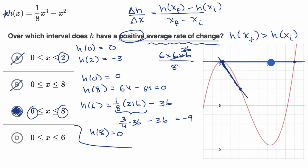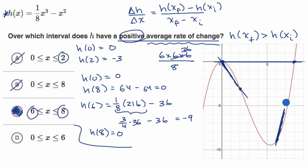You can see it visually: h of six — when x is equal to six, our value of our function is negative nine. And when x is equal to eight, our value is zero. The line that connects those two points definitely has a positive slope, so we have a positive average rate of change over that interval.